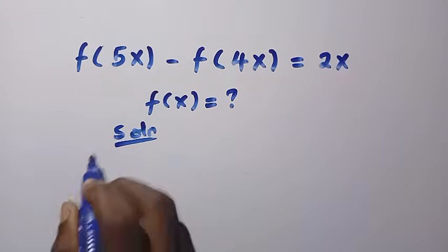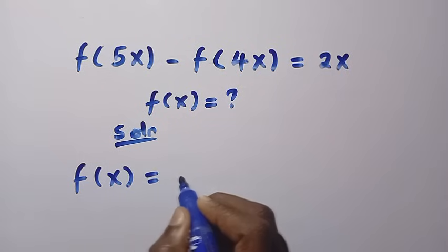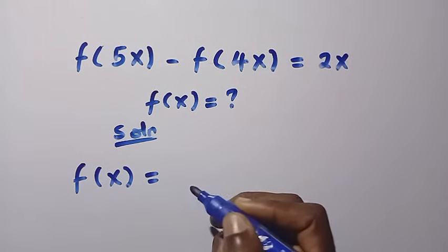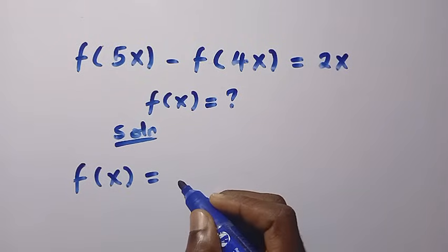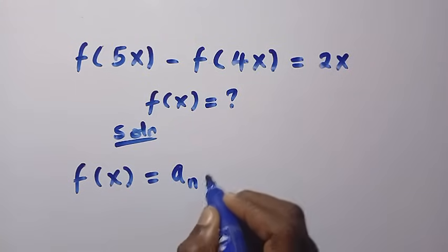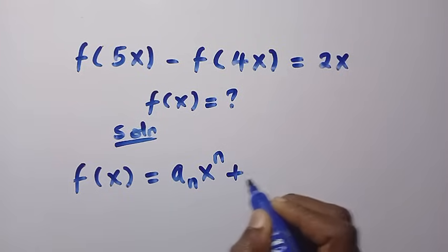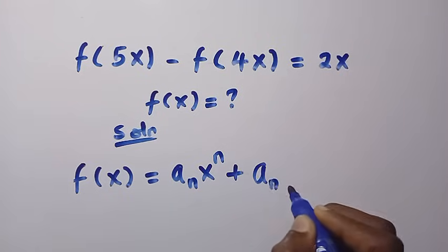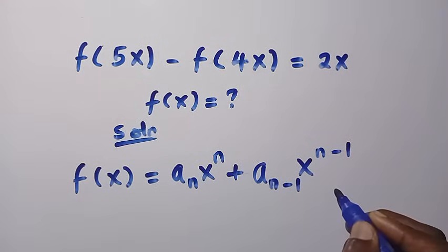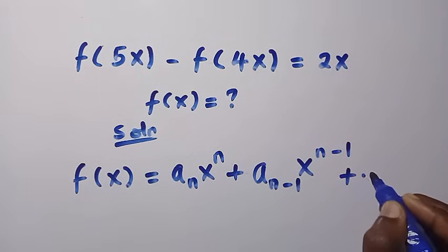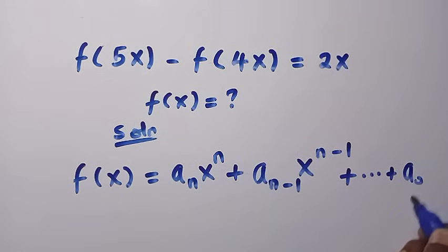We assume that f(x) is in the general polynomial form, since we don't know the degree yet. We write it as: a_n x^n plus a_{n-1} x^{n-1}, and this continues decreasing until we reach a_0.